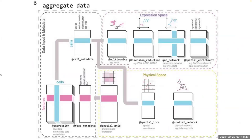Getting into the actual Giotto object structure — most of us when we see this would say it looks like a SummarizedExperiment, and that's because it represents a lot of the same information. We have expression matrices, just like assays in a SummarizedExperiment, which are features by cells. You have metadata about both the features — like genes, transcripts, or proteins — and then metadata about the cells, which would be like colData. A lot of these have analogies with SummarizedExperiment, or more specifically SpatialExperiment.